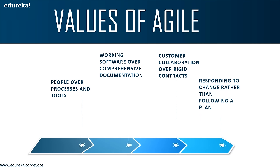Working software over comprehensive documentation means that in agile, functional application is given much more importance than documentation. Every application used to have internal documents of 100 or 150 pages covering all classes, methods, and why the application was built — details you as an individual aren't even concerned about. In agile, if you know how to interpret code, the code itself can act as documentation. Development is given more importance over documentation.